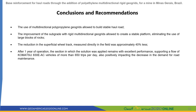The conclusions and recommendations are that the use of multidirectional geogrids allows us to build a stable haul route. The improvement of the subgrade with rigid geogrid allows us to create a stable platform, and in that way we can eliminate the use of large blocks of rock on the base and sub-base. The reduction in superficial wheel track measured directly in the field was approximately 40% less, and after a year of operation, the section where the solution was applied remains in good performance.